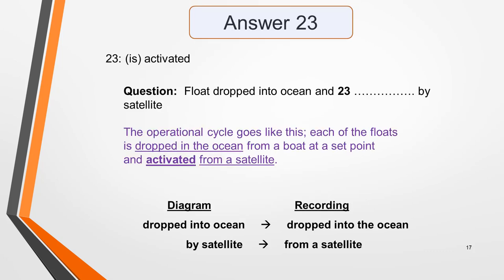Answer 23 is activated. Here are the diagram label and the section of the recording the answer appears in. The sentence in the recording is: the operational cycle goes like this. Each of the floats is dropped in the ocean from a boat at a set point and activated from a satellite. The examiners have been kind here as the language is almost identical in the diagram and in the recording, with no use of paraphrasing. The diagram reads dropped into ocean and in the recording it's dropped into the ocean, and by satellite is changed to from a satellite. So they're very similar.